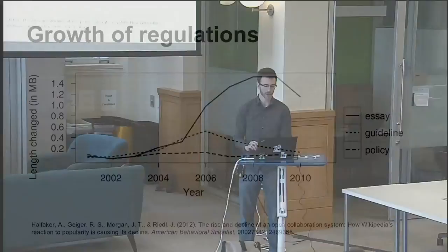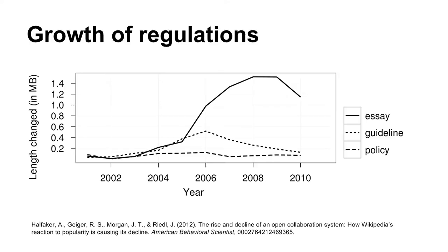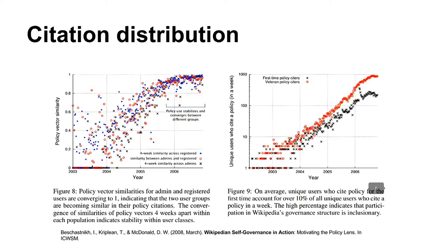I want to talk about the growth dynamics of these regulations. There was steady growth in guidelines and policies until about 2006, around the time Wikipedia got popular, after which we stopped growing them at the same rate. But the rate at which we produce essays — new ideas about behavioral norms — didn't slow down at all; it actually sped up quite a bit.